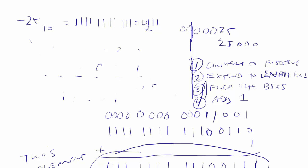We'll pause for a second. Okay, so that's a negative 25. And let's say we take negative 25 and convert what is 30 in base 10 to binary.